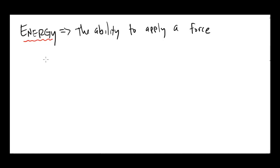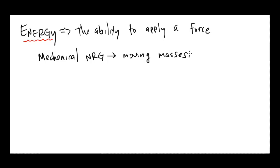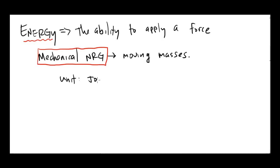We're going to be specifically thinking about a type of energy called mechanical energy. Mechanical energy is energy associated with moving masses. We're going to ignore electrical energy, light energy, and heat — we'll just think about the energy associated with masses that are in motion. The unit for energy is the Joule, and we'll be using that unit quite a bit.